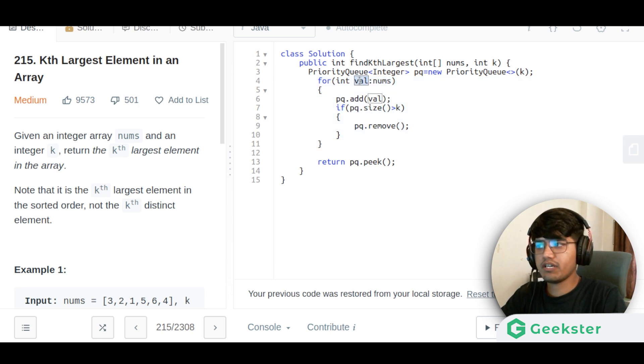For every value in nums we are adding that in the priority queue. And we are continuously checking that if the size of the priority queue becomes greater than k, we just remove that.